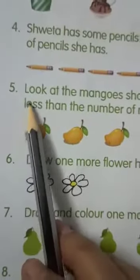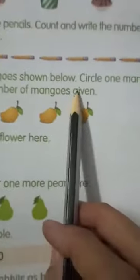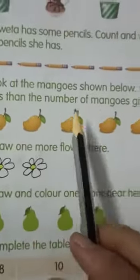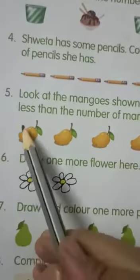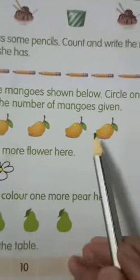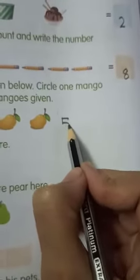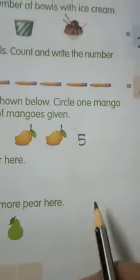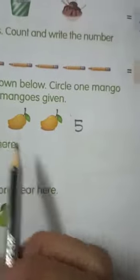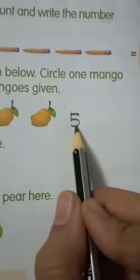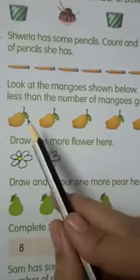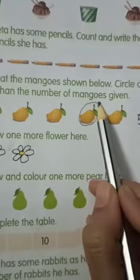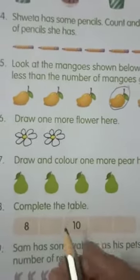The fifth question is, look at the mangoes shown below. Circle 1 mango less than the number of mangoes given. Let's count the mangoes first. 1, 2, 3, 4, 5. There are 5 mangoes. Now, we have to circle 1 mango less than the number of mangoes. That means, 1 less than 5. What is 1 less than 5? 4. So, we have to circle 4 mangoes. 1, 2, 3, 4. Sorry, circle.